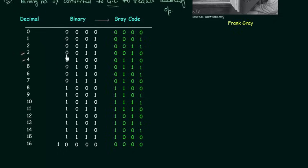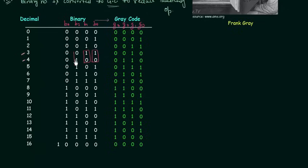3 in binary is 0011 and 4 in binary is 0100. Let's see how many bits we need to change when switching from 3 to 4. Looking at bits b3, b2, b1, b0: b0 is changing from 1 to 0, b1 is also changing from 1 to 0, b2 is changing from 0 to 1, and b3 remains the same at 0.